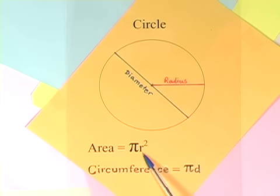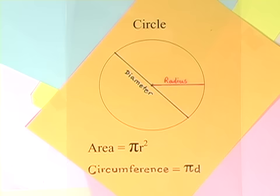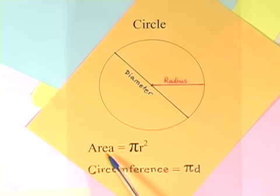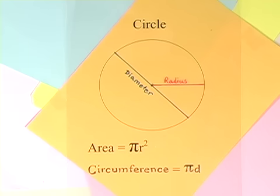Pi r squared sounds like area to me. When I need a circumference, I'll just use pi d. Pi r squared sounds like area to me. When I need a circumference, I'll just use pi d.